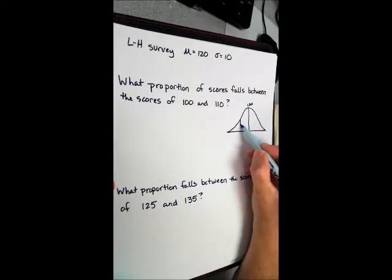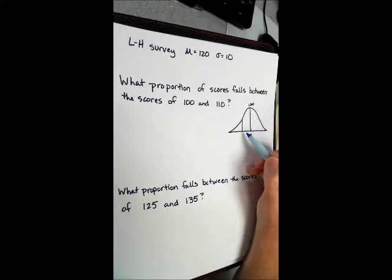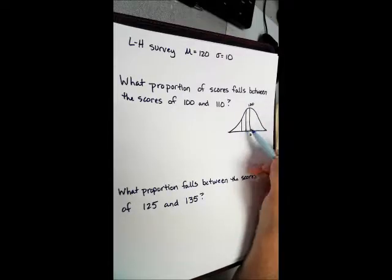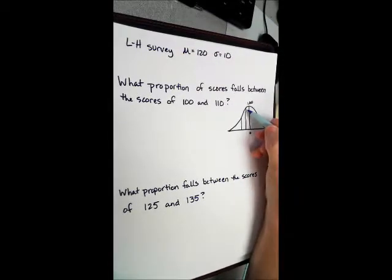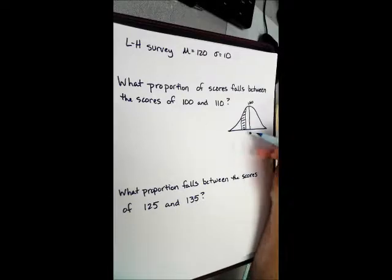What proportion of scores fall between the scores of 100 and 110? Well, this is 120. 100 is going to be down here somewhere. It doesn't really matter where you put it, just put it there. We know it's below the mean. 110 is also below the mean, so it's going to be there. What are we looking for? We are looking for that.